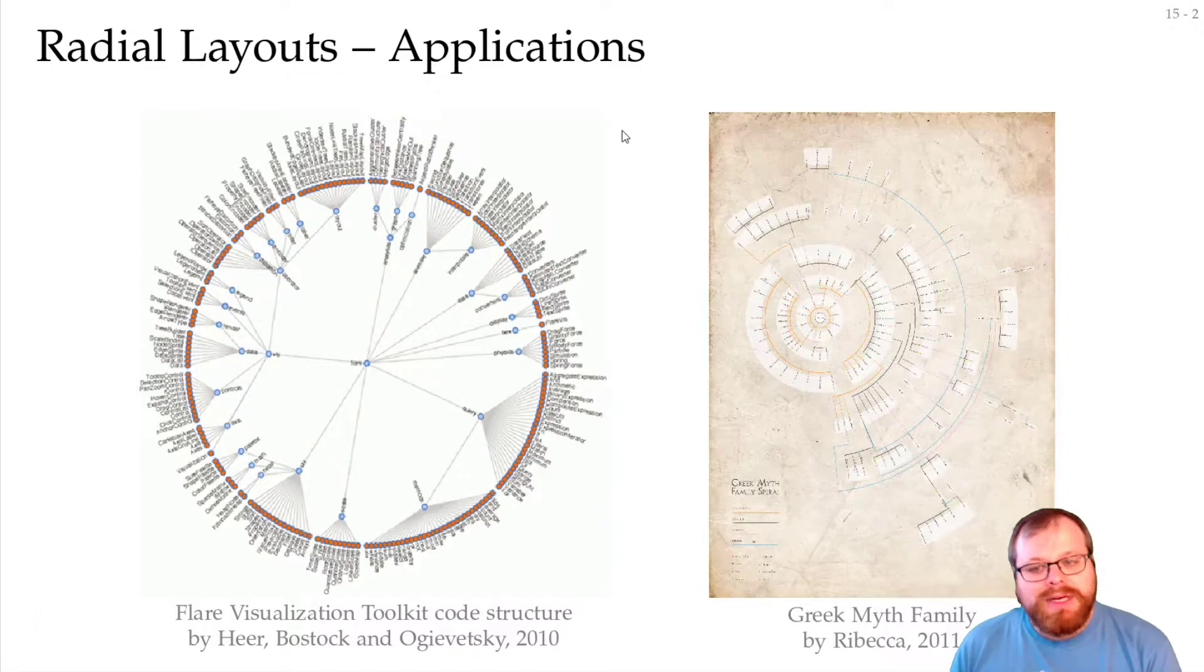In general, whenever we have many, many leaves that have to be placed around not so few inner vertices, then it makes sense to use a radial layout so we have more space for those leaves here. If we do it in a hierarchical way, then all these have to be placed next to each other, and that takes much more space than placing them on a circle.